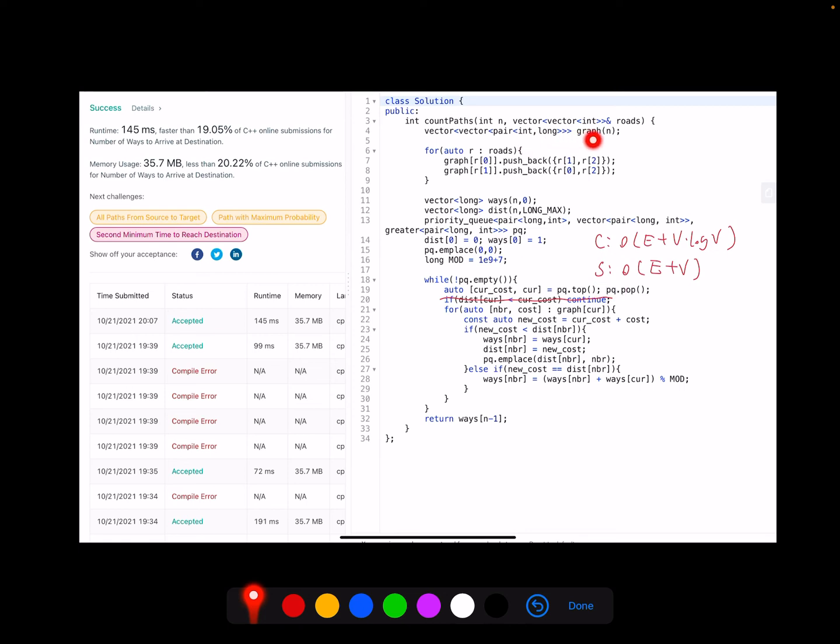And for space complexity, we open a graph here to access the neighbors of the current node easily. And we have ways, distance, and priority queue. So these three - yeah, maybe the priority queue has a little bit larger size. But I think the graph has the largest one because it contains all the edges and nodes. The length of the graph for the first vector will be n. Then we continue to push the edges into there. And mostly we push E edges. So the graph size is O(E + V). So we take the maximum of the graph size compared with the ways and distance.